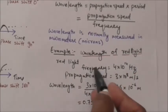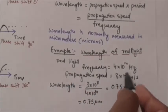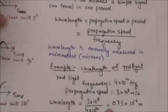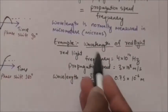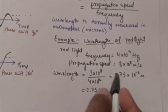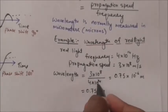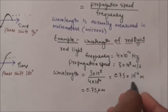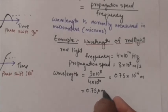Let us find the wavelength of red light. The frequency of red light is 4 × 10 to the power of 14 hertz and the propagation speed is 3 × 10 to the power of 8 meters per second. Using the formula wavelength equals propagation speed divided by frequency: wavelength equals 3 × 10⁸ divided by 4 × 10¹⁴, which equals 0.75 × 10 to the power of minus 6 meters, or 0.75 micrometers.